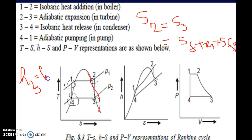h3 is equal to hf plus x3 times hfg. The values of hf and hfg are obtained from the steam table at point 3, again at the condenser pressure. x3 has already been calculated from the isentropic entropy condition s2 equal to s3, so h3 can now be easily determined.